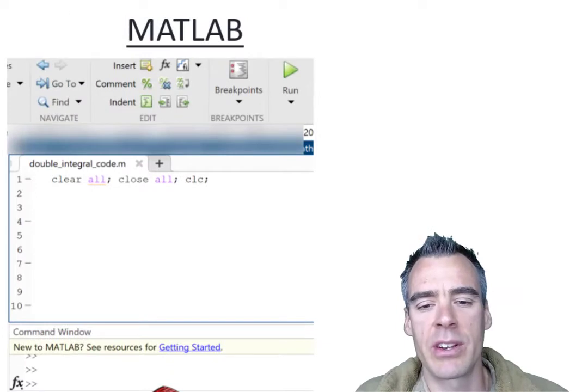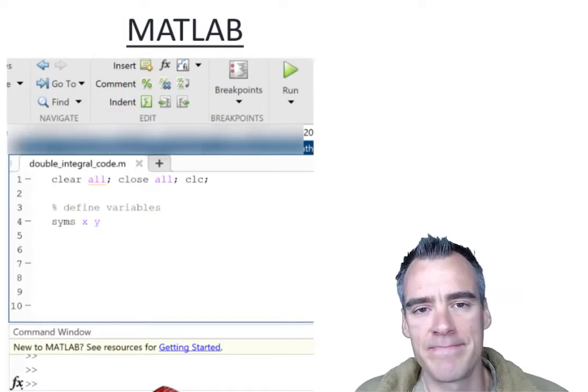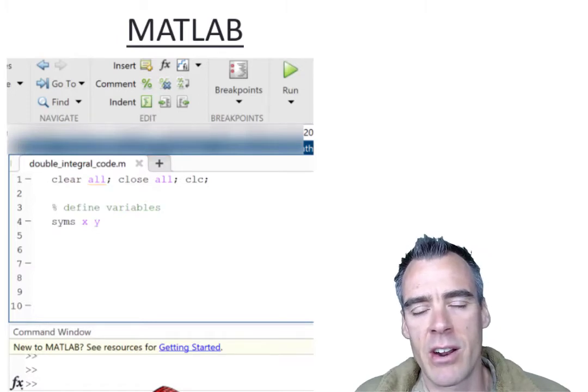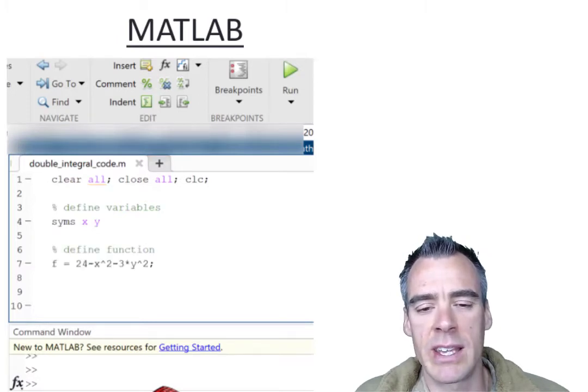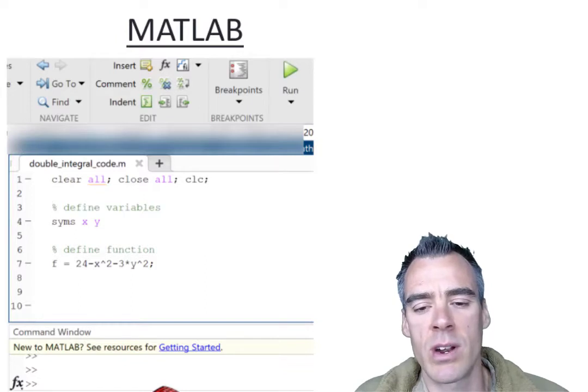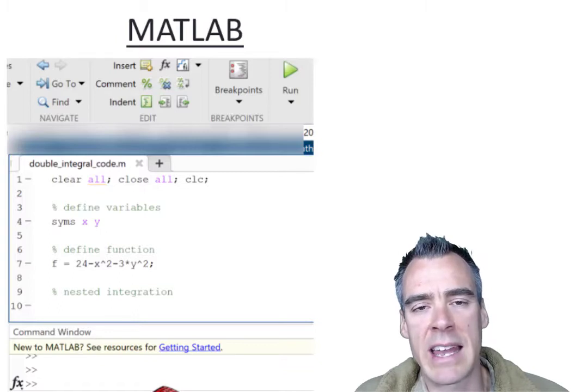The first thing that we're going to do in MATLAB is define our x and y as symbolic variables. Then we're going to define our function, f of x, y equals 24 minus x squared minus 3y squared. And finally, in our single command here, we're just going to use the integrate command, int,